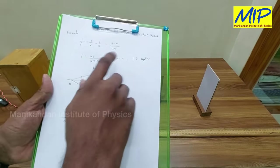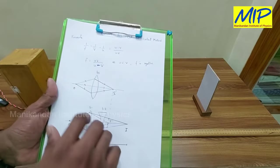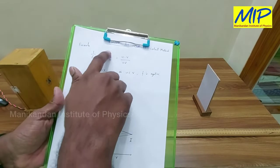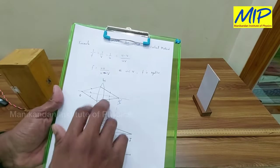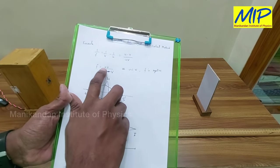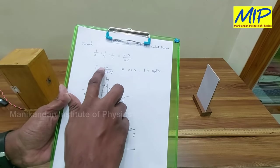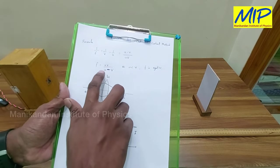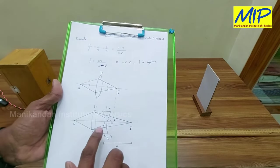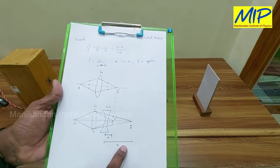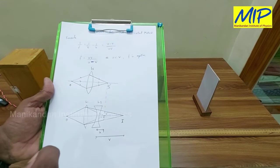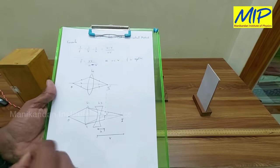Using these U and V values, if I substitute them into the lens formula — 1/F = 1/V − 1/U — and simplify, we get F = UV / (U − V). Using these two values, I am able to find the focal length of the given concave lens.